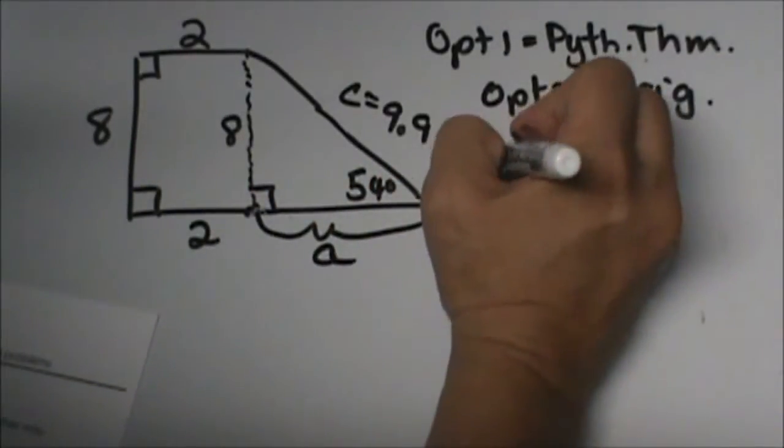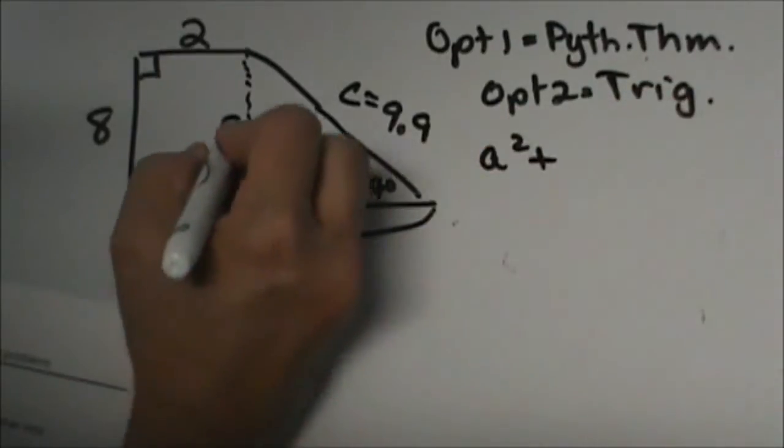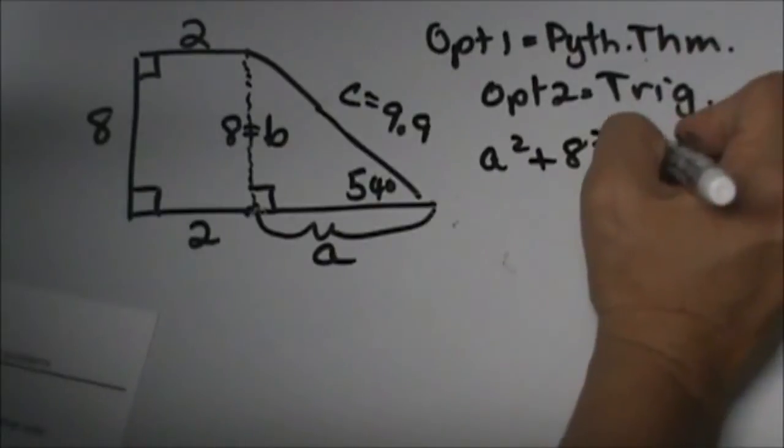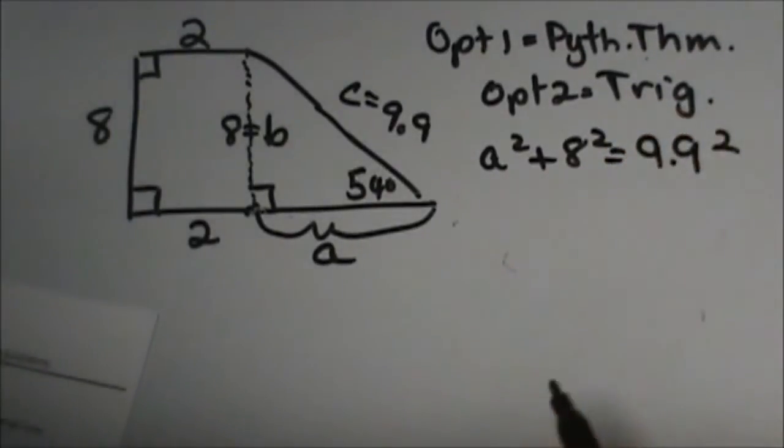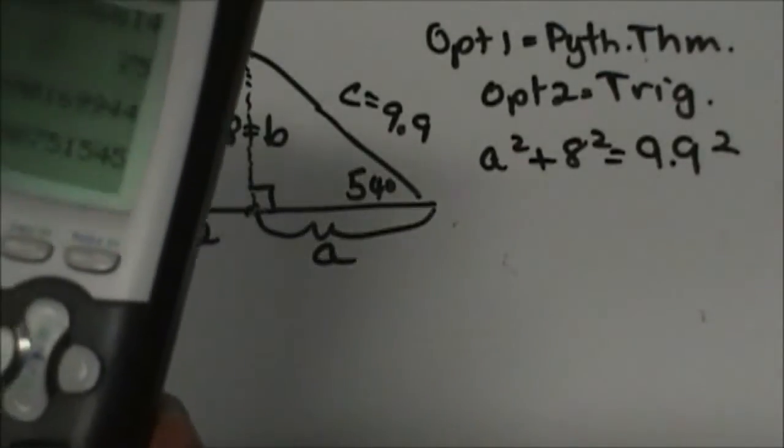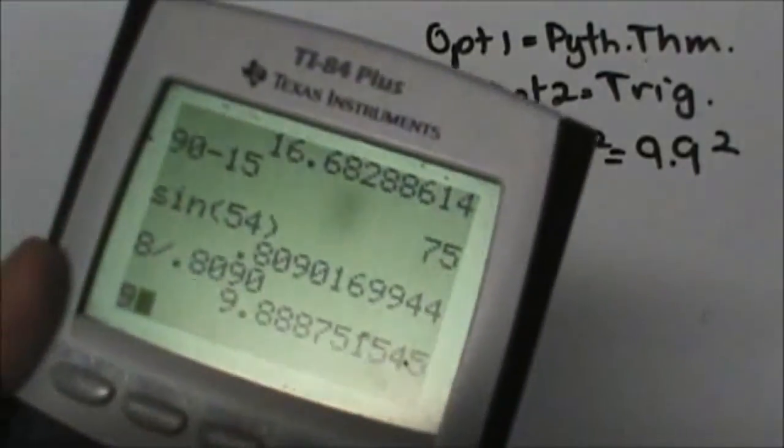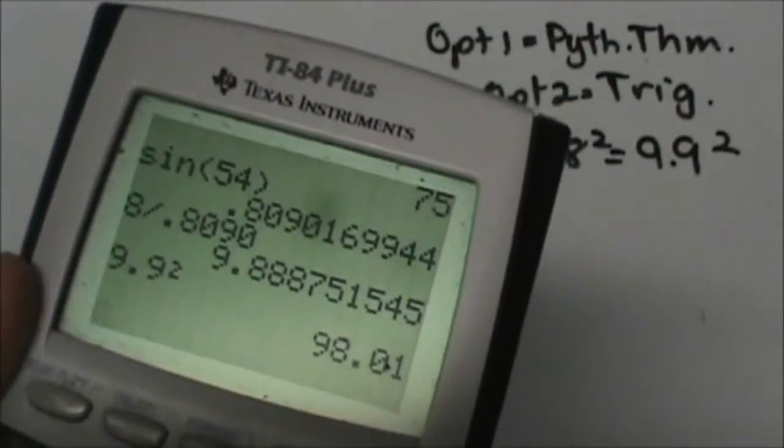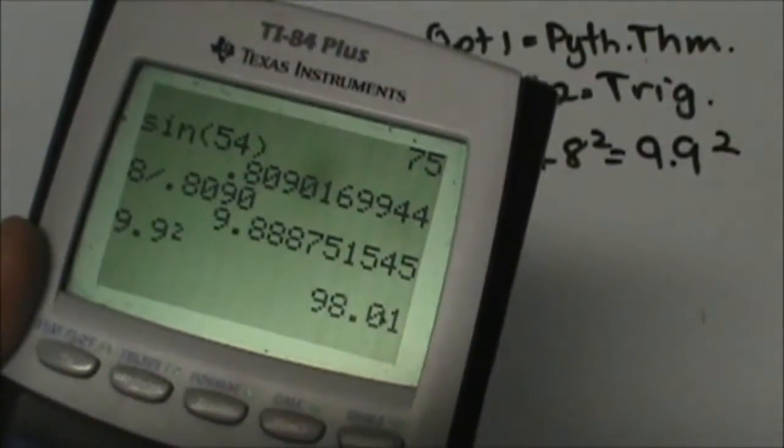So I know A squared plus B, which is my 8 squared, is equal to C squared, which is 9.9. So I'm going to get 9.9 and I'm going to use my square button. That's 98.